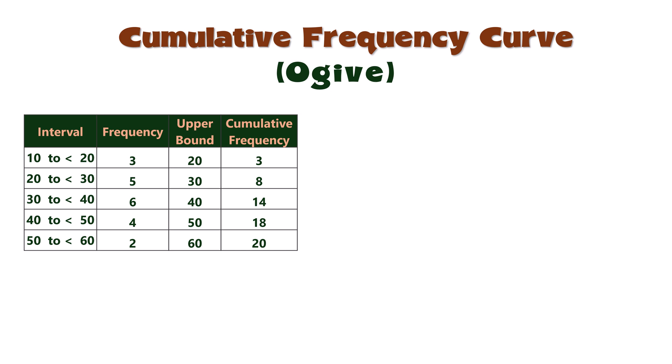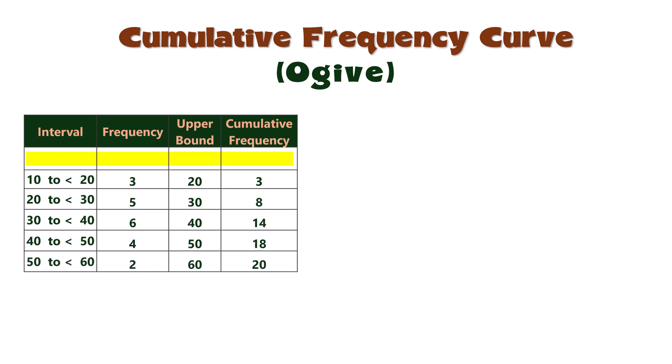To ensure the ogive starts on the horizontal axis, we add an extra point before the first class. Its upper bound is the first upper bound 20 minus the class width 10, which gives 10. Its cumulative frequency is 0 since there are no observations below 10. Now let's plot the graph.